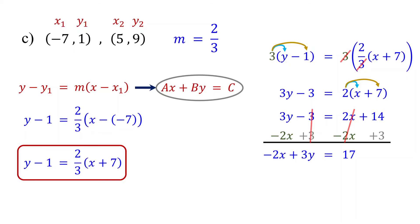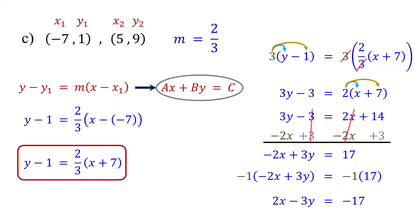Remember, in standard form the coefficient of x should be positive, but here it is negative. To make it positive, multiply both sides of the equation by negative 1. Multiplying by negative 1 simply changes the sign of each term. The equation is now in standard form.